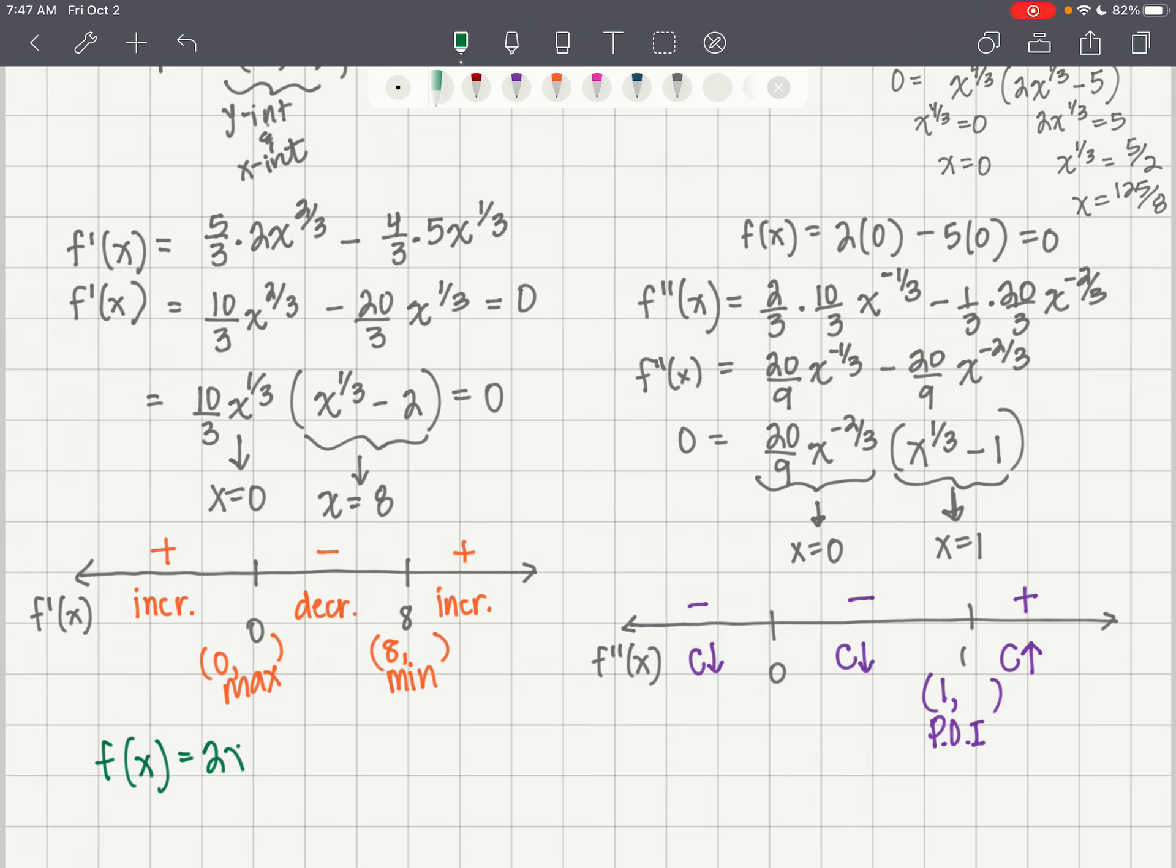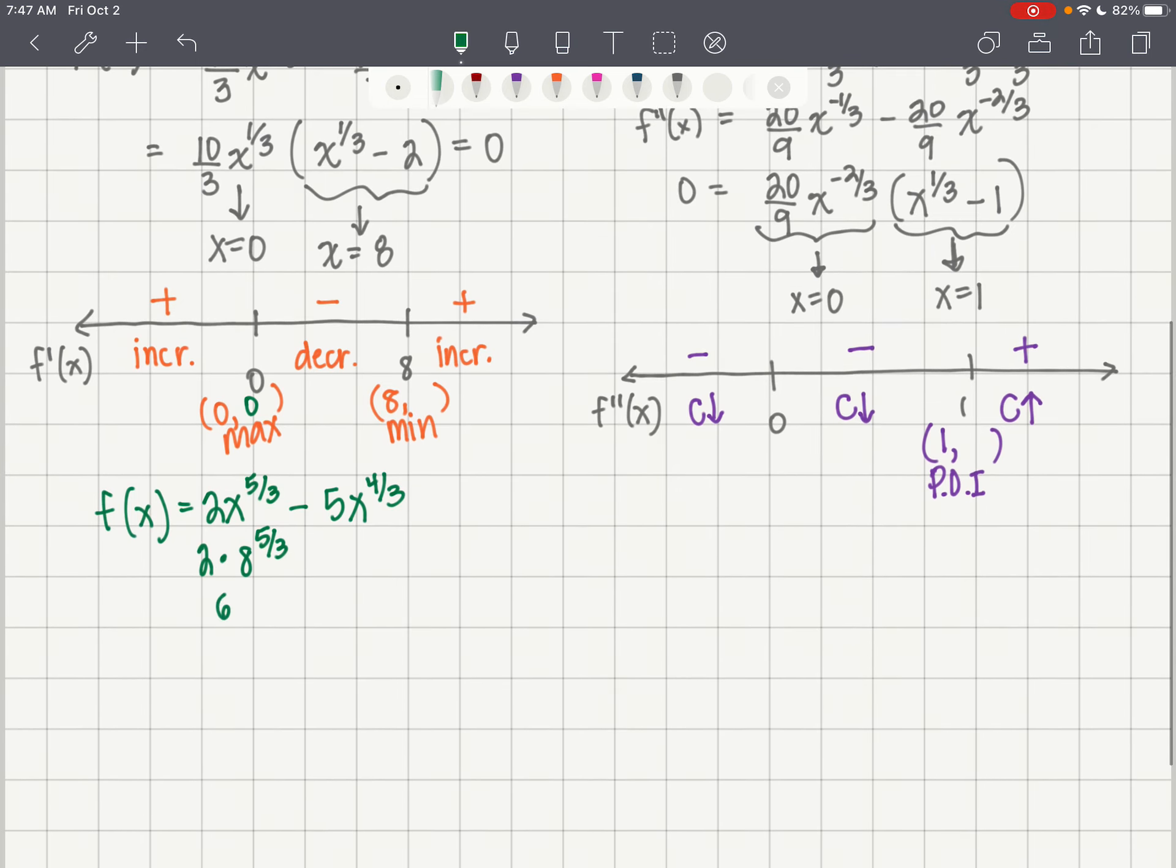f(x) equals 2x to the 5/3 minus 5x to the 4/3. So when we put a 0 in, we get a 0 out. When we put an 8 in, 2 times 8 to the 5/3, the cube root of 8 is 2, 2 to the 5th power is 32, so this is going to be 64 minus, and then again, 5 times 8 to the 4/3, the cube root of 8 is 2, 2 to the 4th power is 16, 16 times 5 is 80, and that gives us negative 16. Our point of inflection, we're going to need to find f of 1. So that's going to be 2 times 1 to the 5/3 minus 5 times 1 to the 4/3, which would be negative 3.